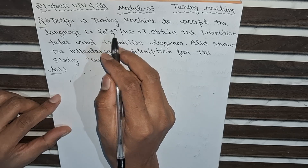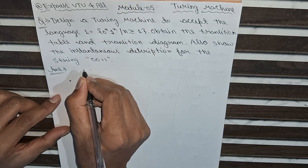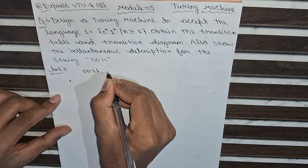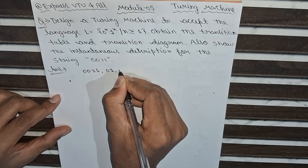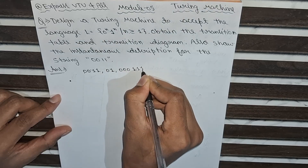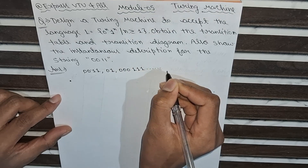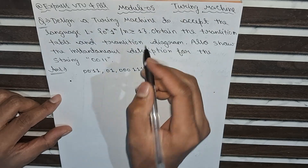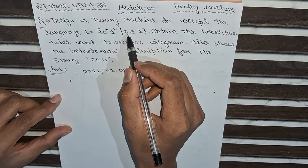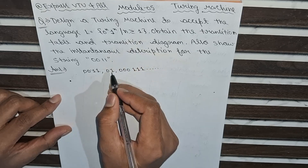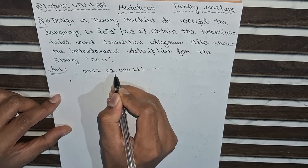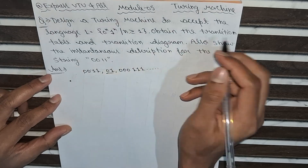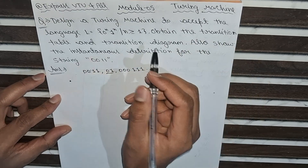According to the language, the strings accepted by this Turing machine include 0011 as given in the question, 000111, and all strings which have an equal number of zeros and ones. One more condition is that n ≥ 1, which means the minimum string 01 will be accepted.